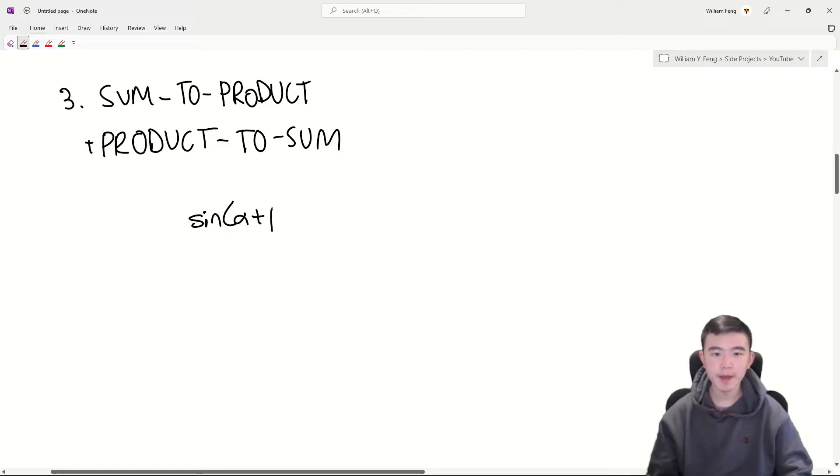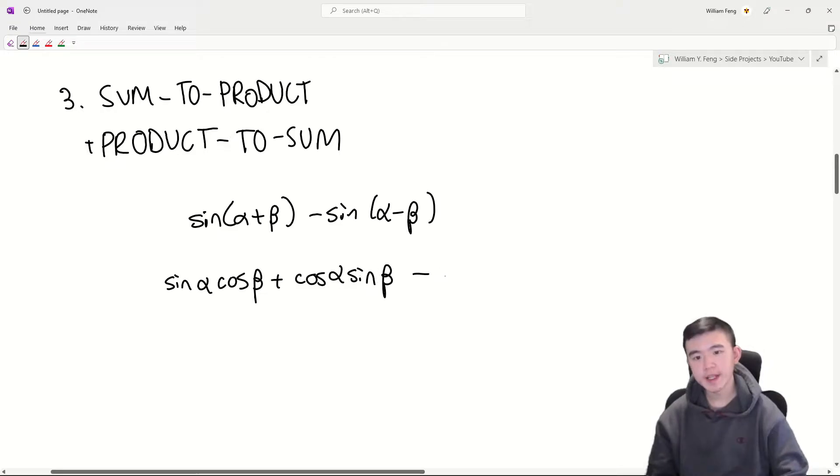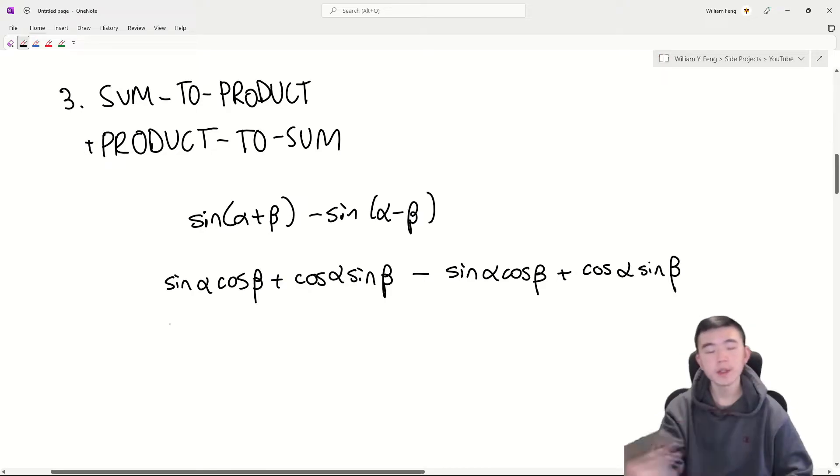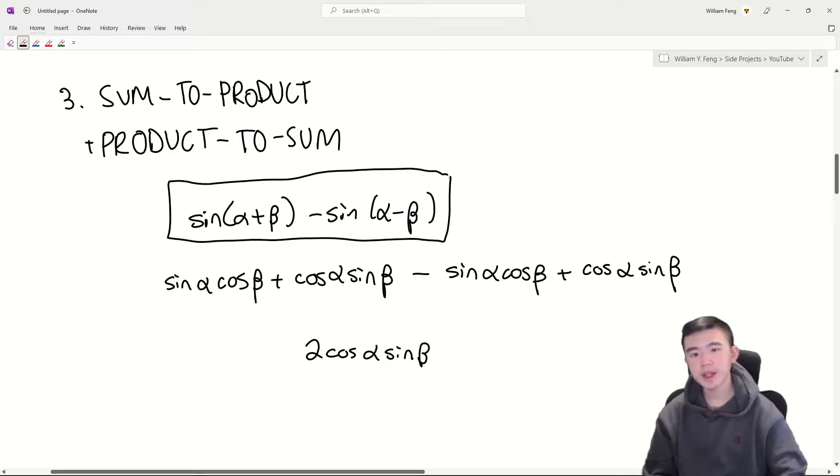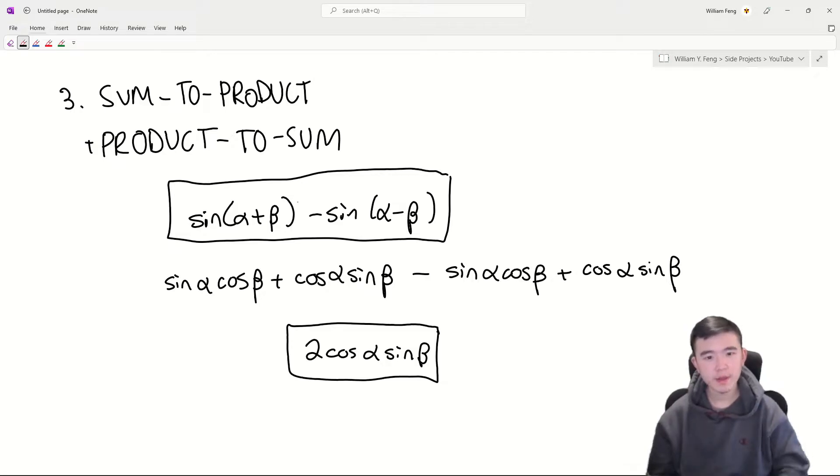If we have sine alpha plus beta minus sine alpha minus beta, then we have expanding sine alpha cosine beta plus cosine alpha sine beta minus sine alpha cosine beta plus cosine alpha sine beta. These are just the usual trig addition identities. Then what we get is a bunch of stuff cancels out, and we are left with 2 cosine alpha sine beta. That's how you go from a difference of sines to a product of cosine and sine. If you work through all possibilities just by working through the sines and the cosines and the negatives and the positives, then you end up with all the sum-to-product and product-to-sum identities.